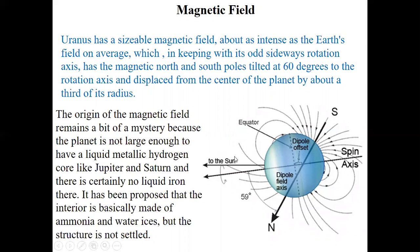Another factor we like to learn about planets is magnetic field. Uranus has a reasonable magnetic field, about as intense as Earth field on average. Saturn and Jupiter are really big and their magnetic field is huge compared to Earth. But Uranus has about the same size magnetic field around it. Keeping with its odd sideways rotation axis, it has the magnetic north and south pole tilted 60 degrees to the rotational axis. This is the rotational axis, the spinning axis. This is the magnetic axis. They are not aligning on top of each other. There's about a 60 degree difference here.